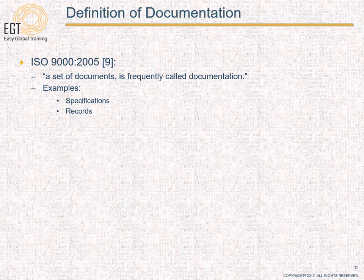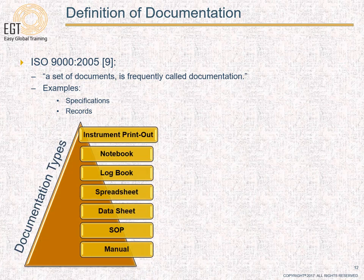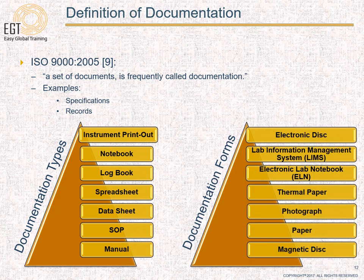Based on ISO definition, a set of documents is frequently called documentation. Specifications and records are two examples of documentation. The main objective of documentation is to introduce sufficient instructional details to facilitate a common understanding of requirements, and to perform sufficient recording of various processes and evaluation of observations so that ongoing application of requirements can be demonstrated. Types of documentation include instrument printouts, notebooks, logbooks, spreadsheets, data sheets, SOPs, and manuals, in forms such as paper, thermopaper, electronic disk, LIMS, ELN, magnetic disk, optical disk, and photographs.